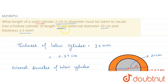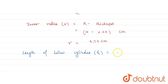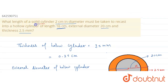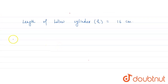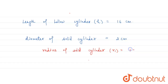Now, what is the length of the hollow cylinder? It is 16 centimeters. So length of hollow cylinder, let us call this small h, and h is equal to 16 centimeters. For the solid cylinder, diameter is equal to 2 centimeters. So the radius of the solid cylinder, let us call this R1, is equal to 2 divided by 2, meaning 1 centimeter.